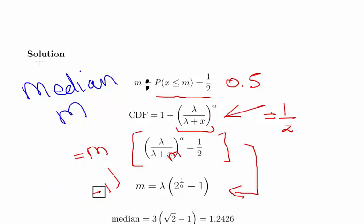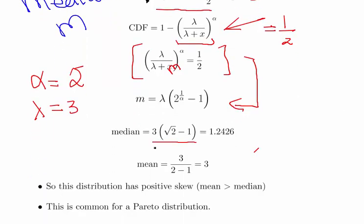Previously we were told that alpha is equal to 2 and lambda is equal to 3. So we get this expression here. Substitute in the values there: 3 times the square root of 2 minus 1. That turns out to be 1.2426.